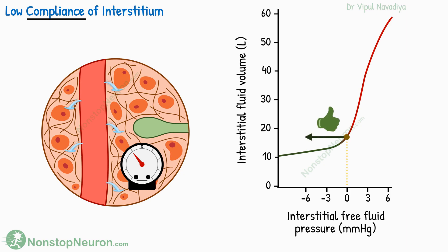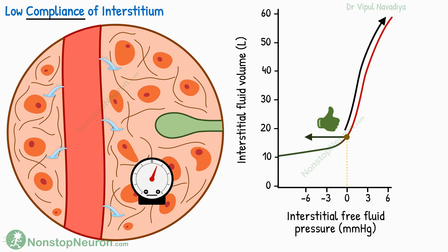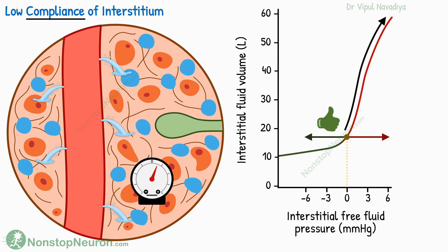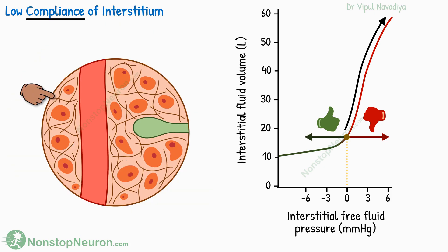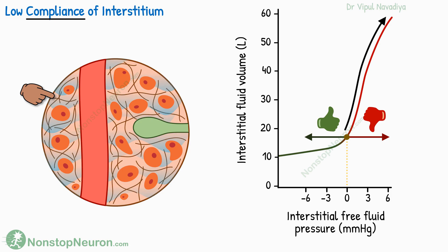However, this factor is helpful only in the negative pressure range. Normally, the proteoglycan filaments in the interstitium hold the tissue together. But as the pressure crosses zero, these filaments start getting separated, so the compliance increases markedly. In the positive pressure range, a large amount of fluid can accumulate with a relatively small increase in pressure, so this safety factor no longer helps prevent edema. Apart from keeping the compliance low, the proteoglycan filaments also contribute differently — without these filaments, fluid would simply flow downwards by gravity and accumulate in the lower parts of the body. But these filaments obstruct such flow of fluid, thus preventing edema of the lower parts of the body.